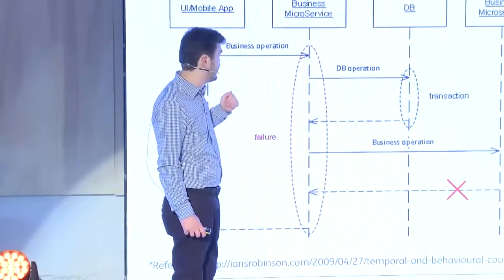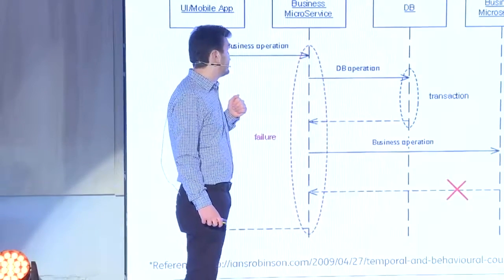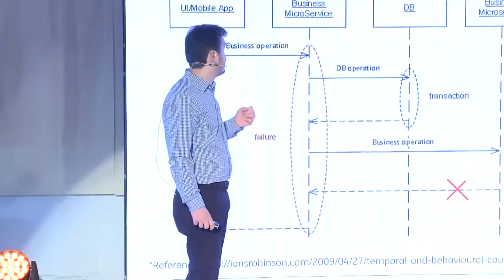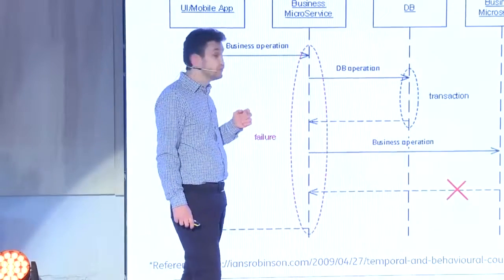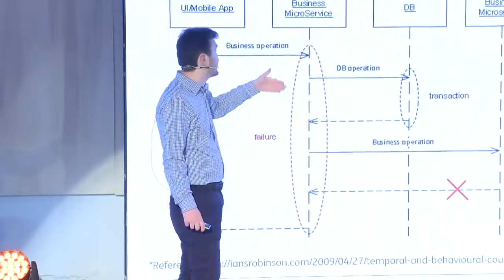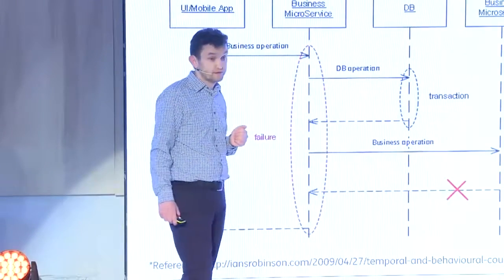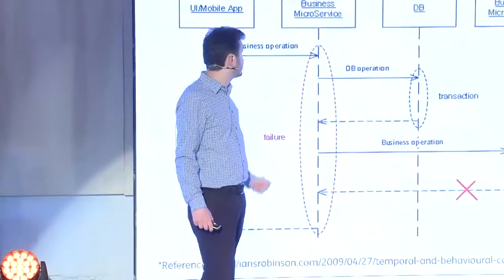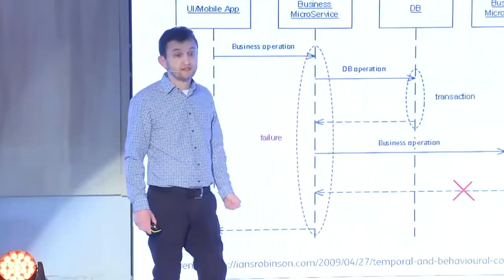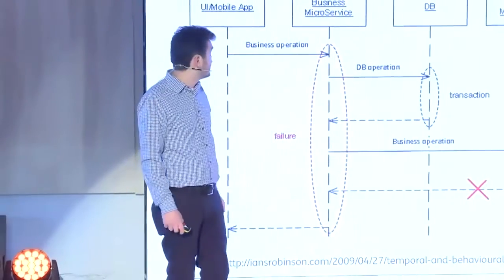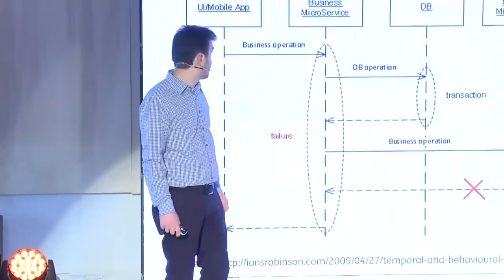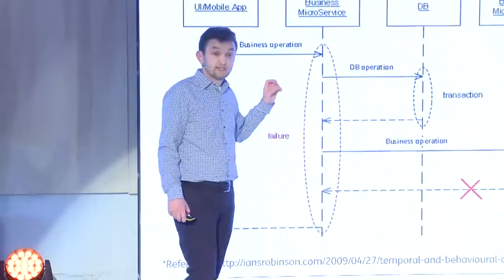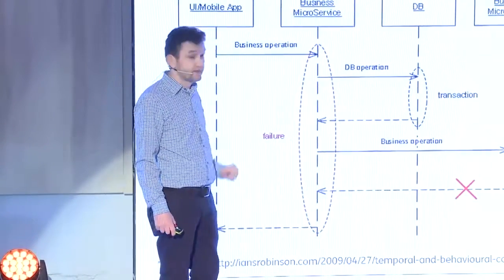If our business service depends on another service and that other service is not available, our service will also not be available. This temporal coupling occurs not only when the other microservice goes down, but also in cases of poor performance — if response times are high, our response time will also be high. From a scalability standpoint, we can scale our microservice independently, but we will eventually hit the scalability limit of the microservice we depend on.